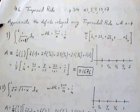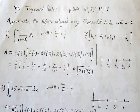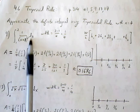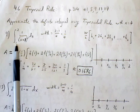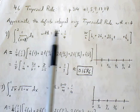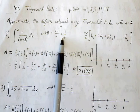So approximate the definite integral using trapezoidal rule with n equals 4. The lower bound is 1, the upper bound is 2, so my width is simply going to be b minus a over n. My n value is 4, so 1 fourth.